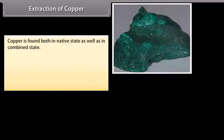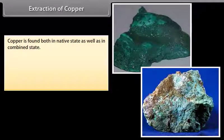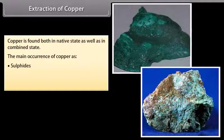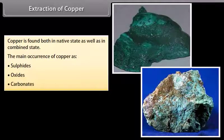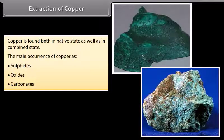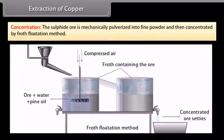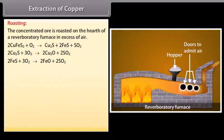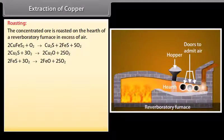Extraction of copper. Copper is found both in native state as well as in combined state. The main occurrence of copper as sulfides, oxides and carbonates. The important steps involved in the extraction of copper are: Concentration. The sulfide ore is mechanically pulverized into fine powder and then concentrated by froth flotation method. Roasting. The concentrated ore is roasted on the hearth of a reverberatory furnace in excess of air.